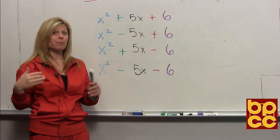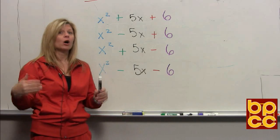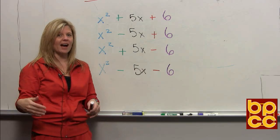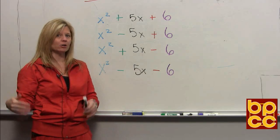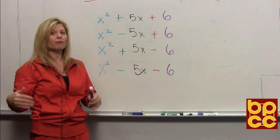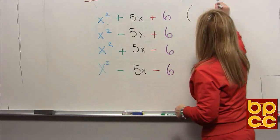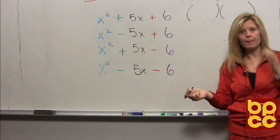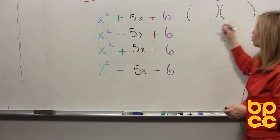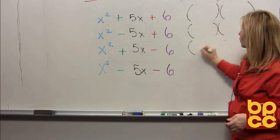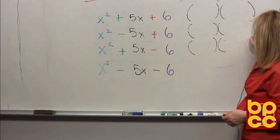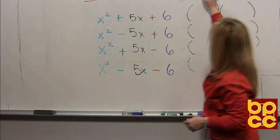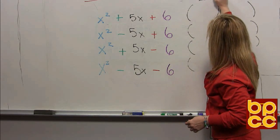There is a process, a pattern to follow when you factor a trinomial. The first thing is a trinomial will always factor into two binomial expressions. So the first thing we're going to do is automatically put two sets of parentheses — because parentheses means to multiply, and that's what factoring is. Every trinomial will factor into two binomials.